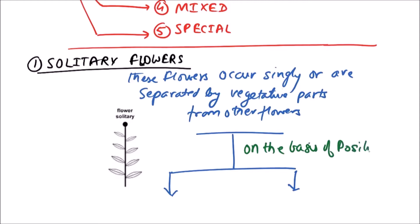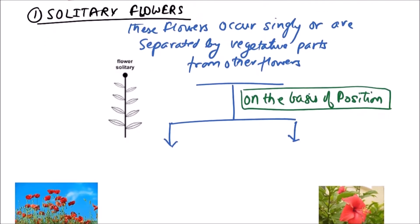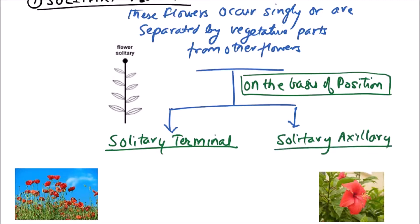On the basis of position of flower, the solitary flowers can be classified into two types: first one is solitary terminal and second one is solitary axillary. Solitary terminal means single flowers occur at the tips of main branch or stem.